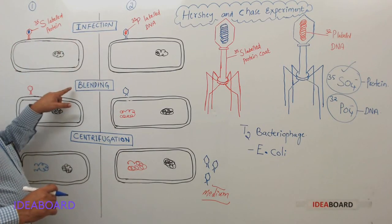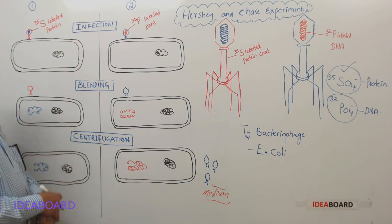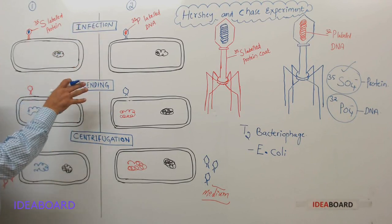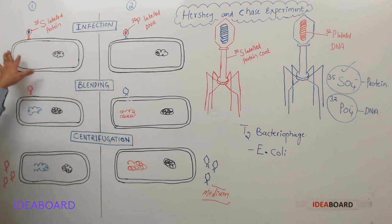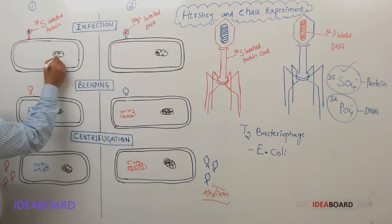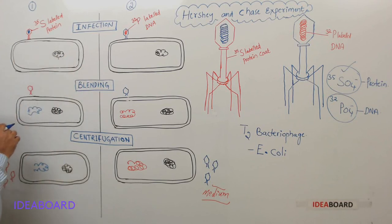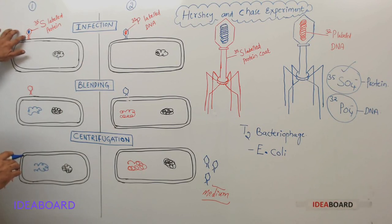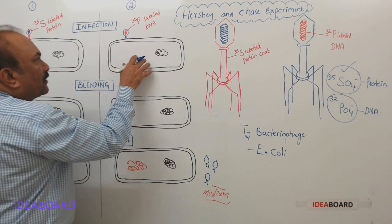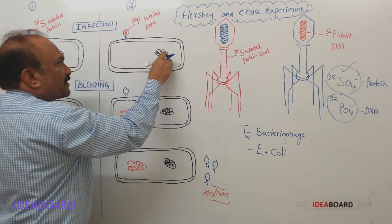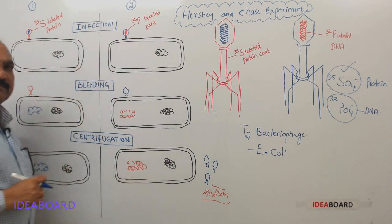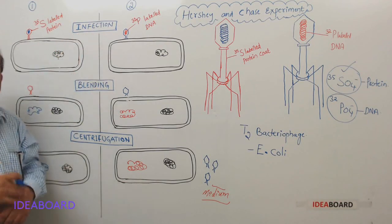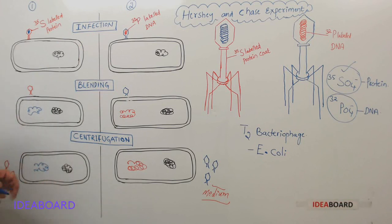In the diagrams, black color represents the bacteria and their DNA. Blue color represents the protein coat, and red color represents labeled DNA. The first step is infection. After infection, blending — that is, agitation — is used to separate the viruses from the bacteria. They are found in the same test tube after blending.